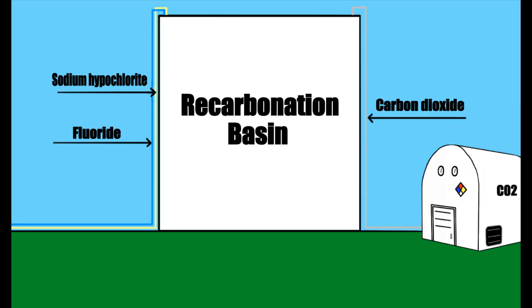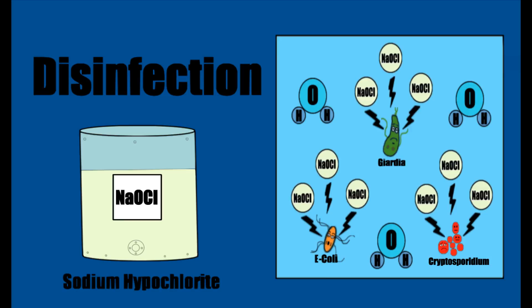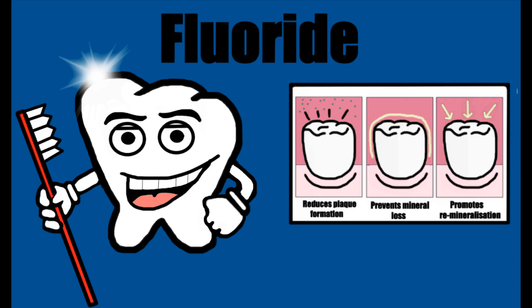After the water has been softened, it travels to the recarbonation basin. Carbon dioxide is added to stabilize the water and lower the pH. Sodium hypochlorite, or bleach, is then added to kill off any potentially harmful bacteria, and a small amount of fluoride is also added to help reduce tooth decay.